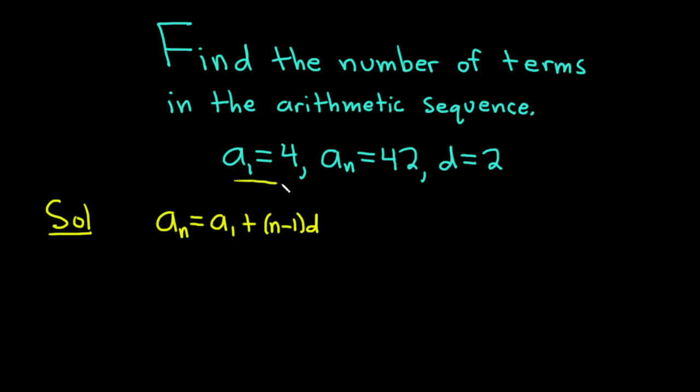Now we can plug in a sub 1 and d. This gives us the formula. So a sub n is equal to 4, that's our a sub 1, plus n minus 1, and then d is 2.